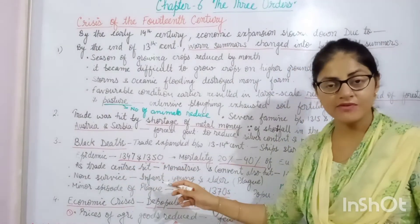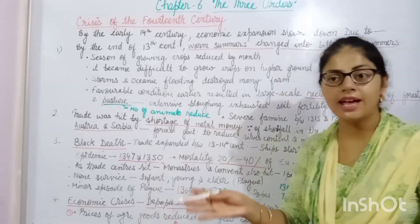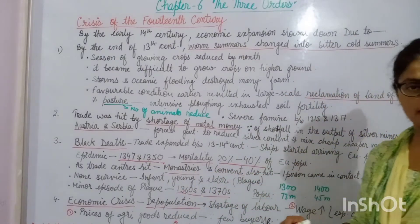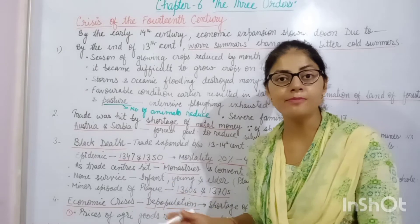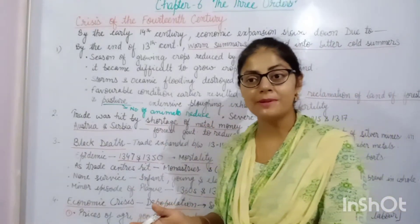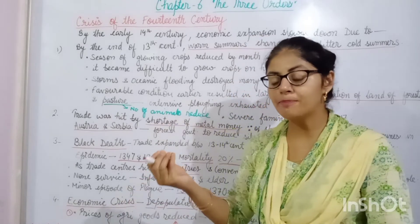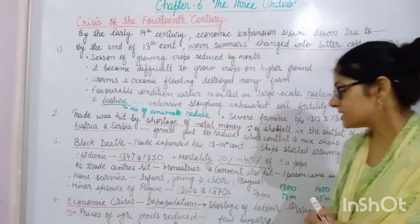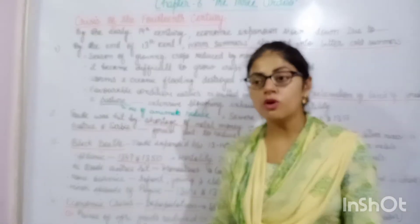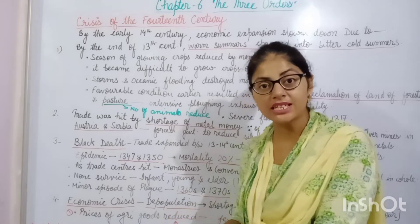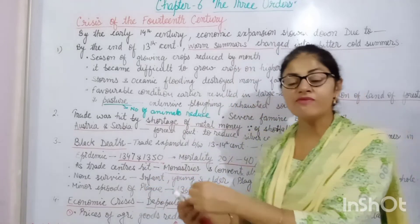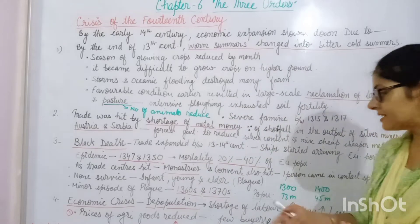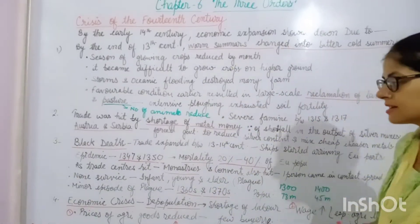Trading centers were hit first since ships arrived there. Later it spread to other areas like monasteries. Monasteries were hard hit because many monks lived together — if one person got infected, it spread to all persons living in the monastery and all died. The disease was so severe that no one who got infected could survive.